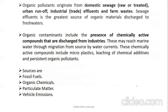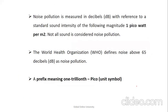Organic pollutants originate from raw or treated sewage, urban runoff, or industrial trade effluents — sewage is the greatest source of organic material discharged into freshwaters. They include chemically active compounds discharged from industries, such as microplastics, chemical additives, and persistent organic pollutants (POPs). Sources include fossil fuels, organic chemicals, particulate matter, and vehicle emissions.